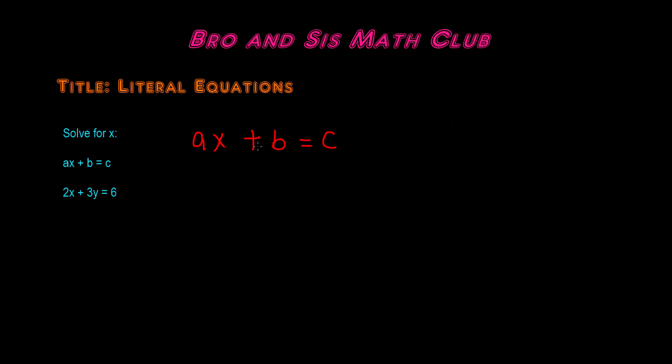So here we have plus b. The opposite of plus is minus because the opposite of positive is negative. So we have to do minus b. Remember, whatever you do to one side of an equation, you have to do to the other side.